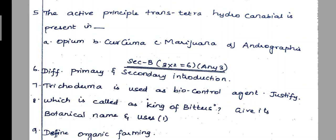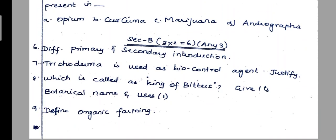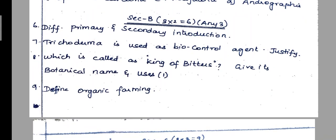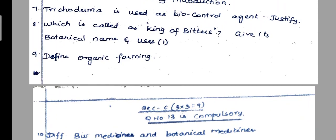7th question: trichoderma is used as a biocontrol agent — justify. 8th question: which is called the king of bitters? Give its botanical name and uses. 9th question: define organic farming.